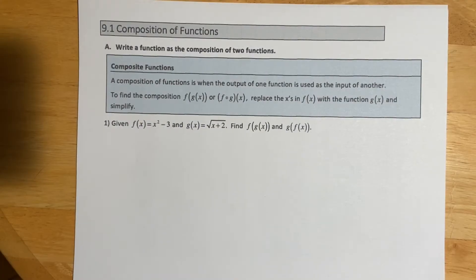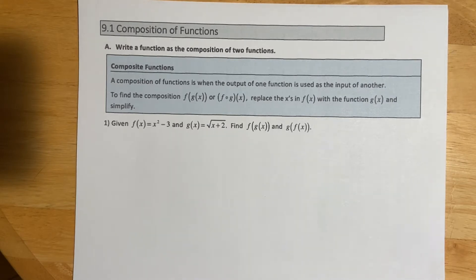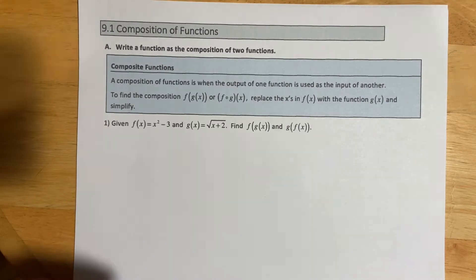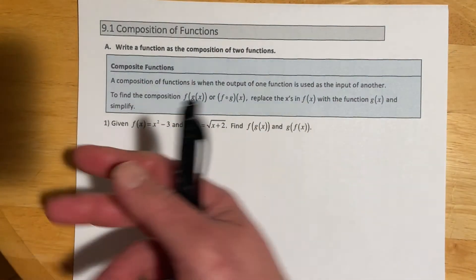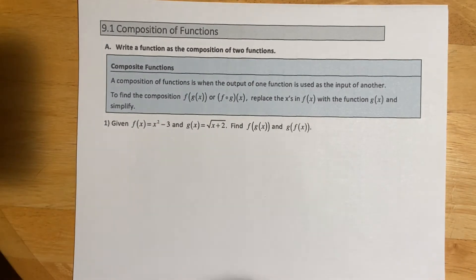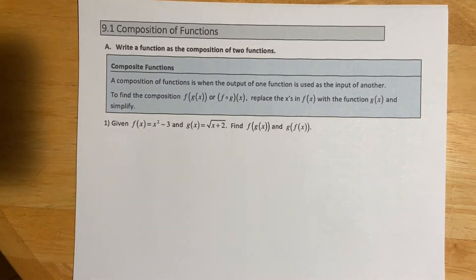Hey all, this is Derek, and this is section 9.1, Composition of Functions. A composition of two functions is when the output of one function is used as the input of another. We do some math, get an answer, and then that answer goes into another function. Or, if we're not actually evaluating, we can take one function and put it into another, which is what we'll see first.